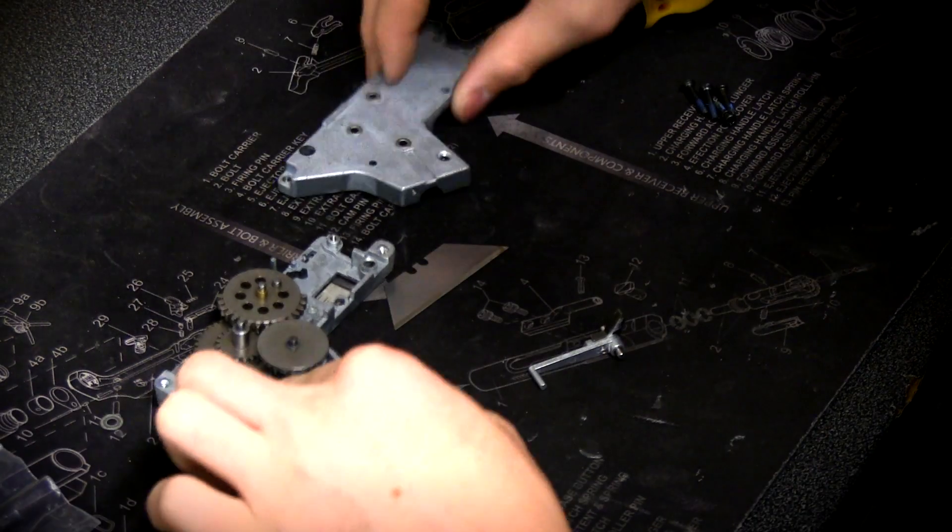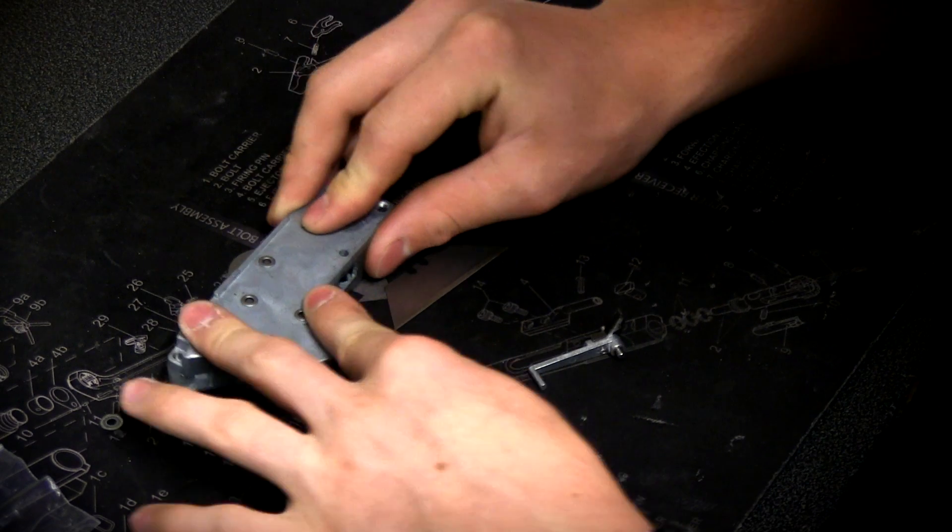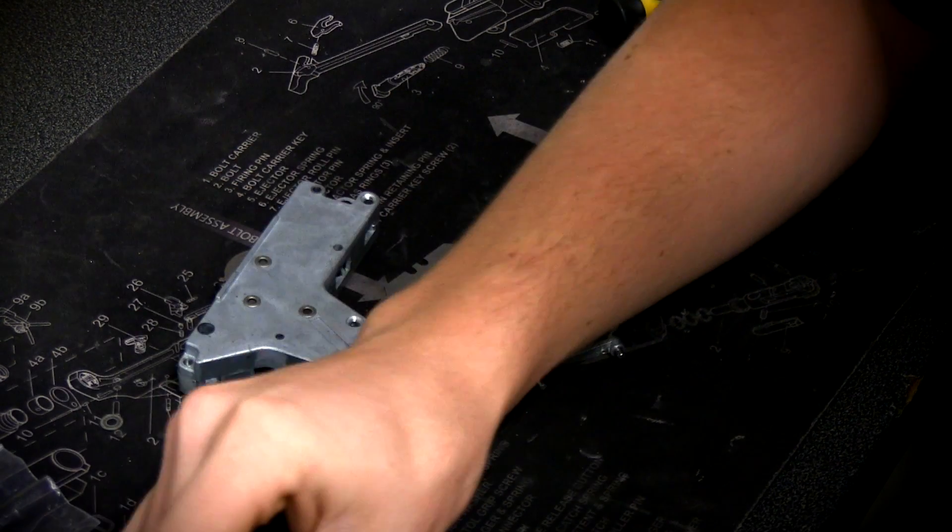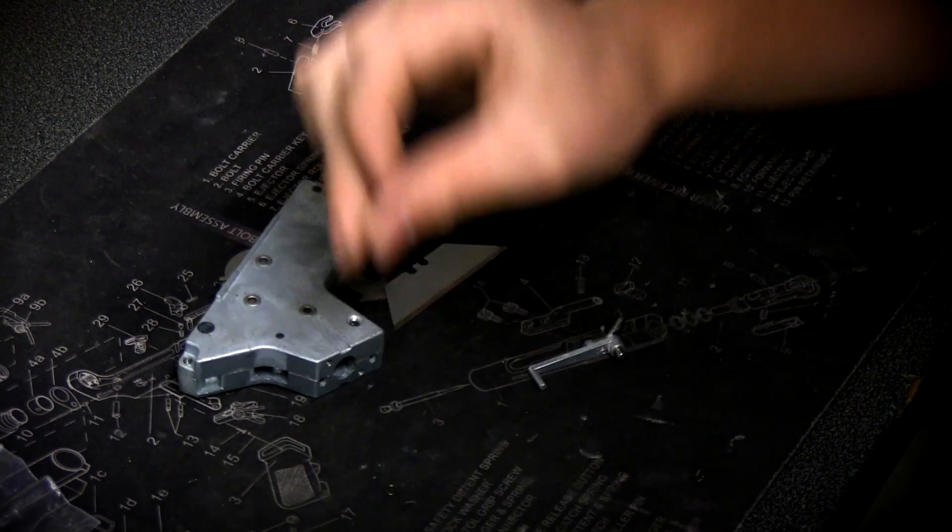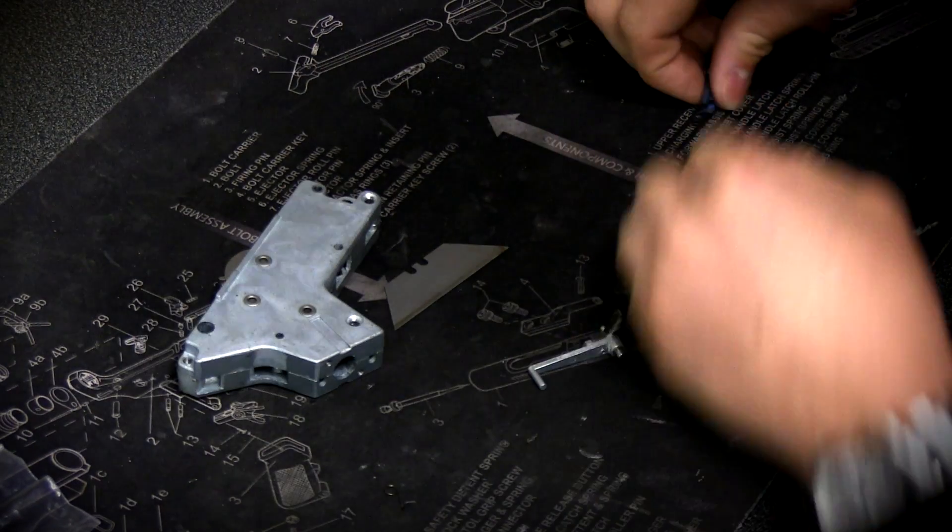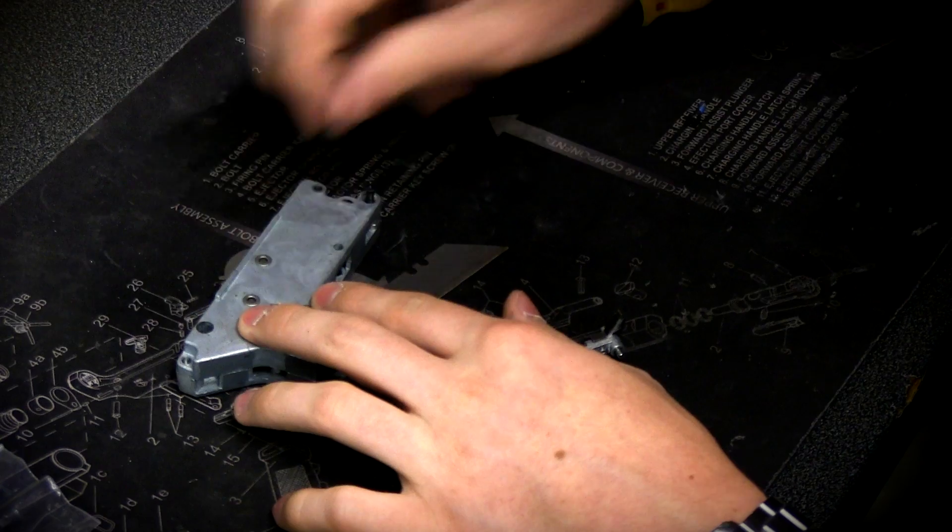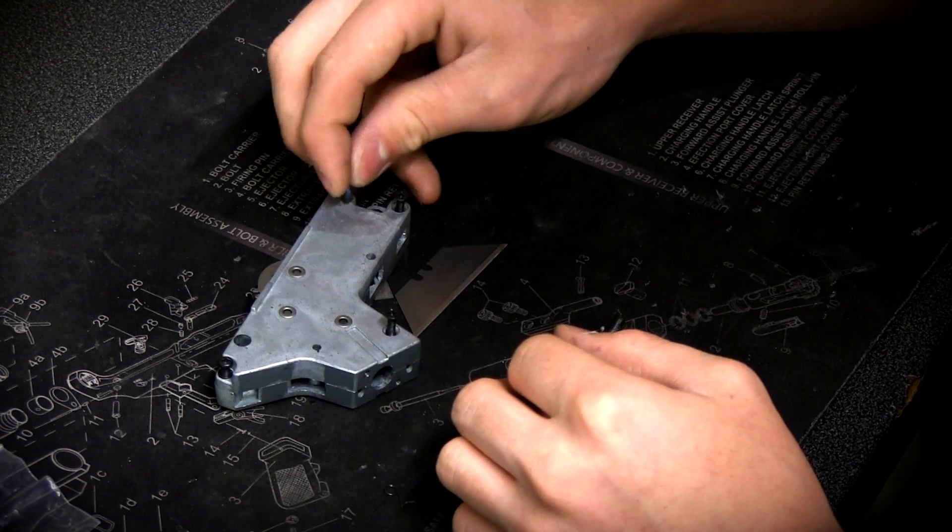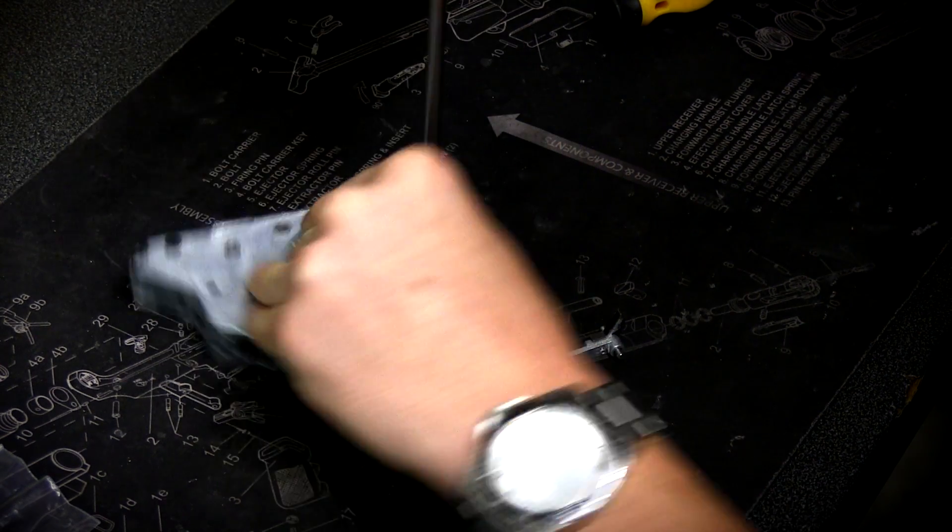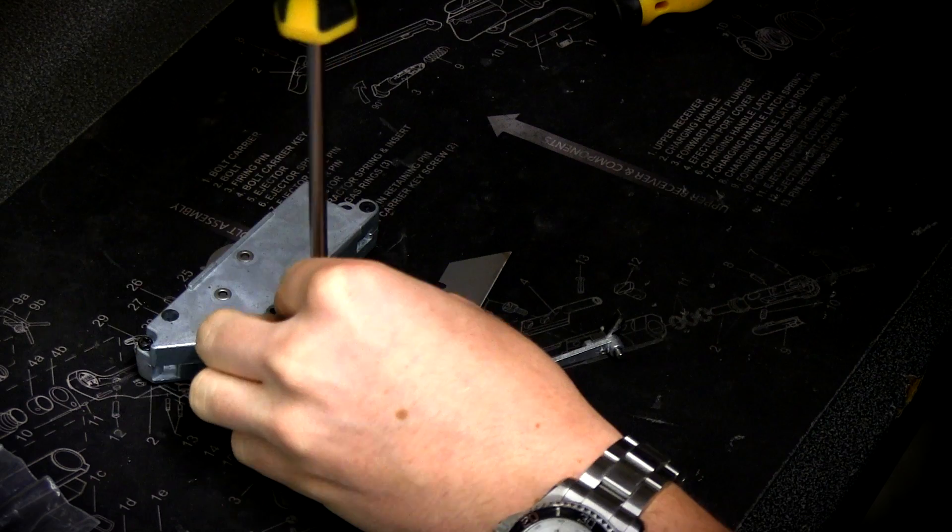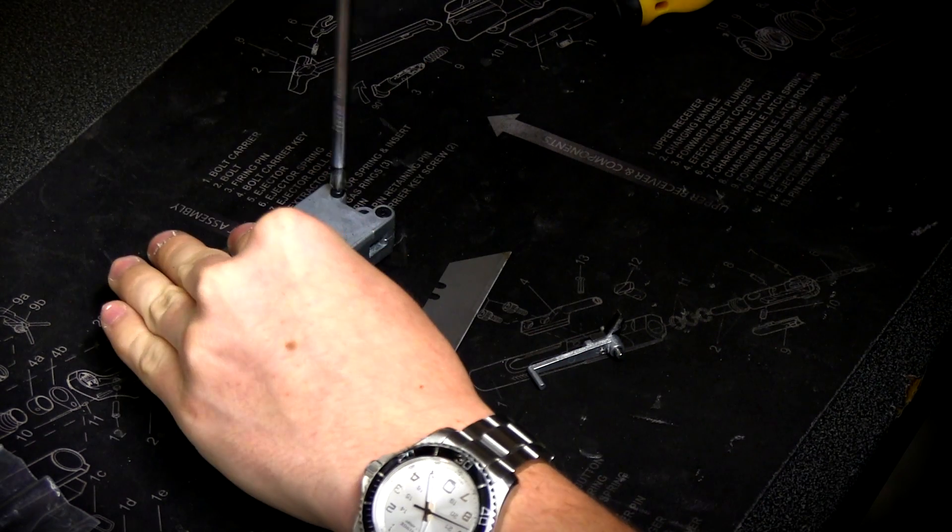So from there we want to go ahead and screw our gearbox shell together. As you can see I'm using an ICS split V2 lower gearbox just for sake of illustration so that you guys can really see what the gear spinning should look like. This will look the same for just about any gearbox regardless of design. Just snug it down like you typically would. Just install your gear set, no need for trigger switch, cylinder assembly, or anti-reversal latch.